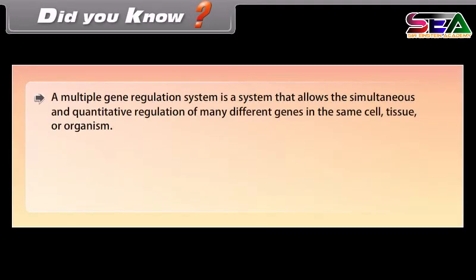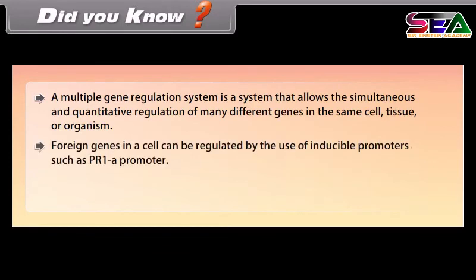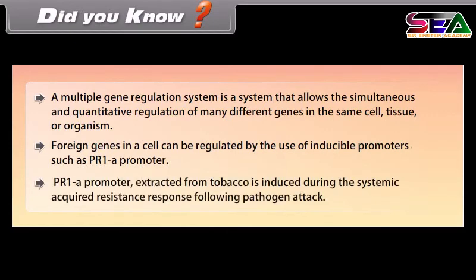A multiple gene regulation system allows the simultaneous and quantitative regulation of many different genes in the same cell, tissue, or organism. Foreign genes in a cell can be regulated by the use of inducible promoters such as the PR1A promoter. The PR1A promoter, extracted from tobacco, is induced during the systemic acquired resistance response following pathogen attack.